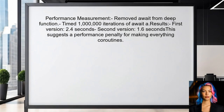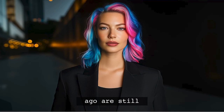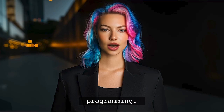As a performance test, I removed the await statement from the deep function and timed 1 million iterations of await A with both setups. The first version took around 2.4 seconds, while the second version took about 1.6 seconds. This suggests there may be a performance penalty for making everything coroutines. Fun fact: the term 'coroutine' was first coined in the 1950s — it's amazing how concepts from decades ago are still relevant in modern programming.